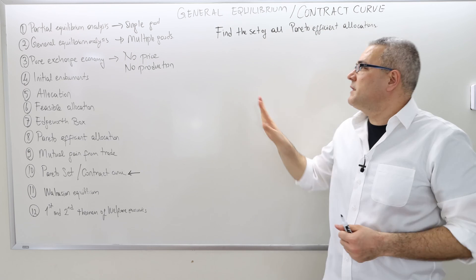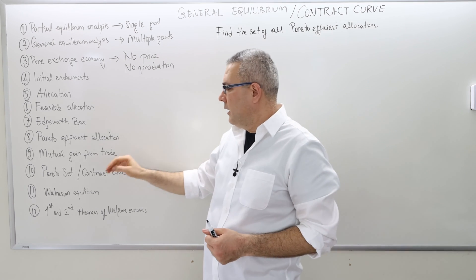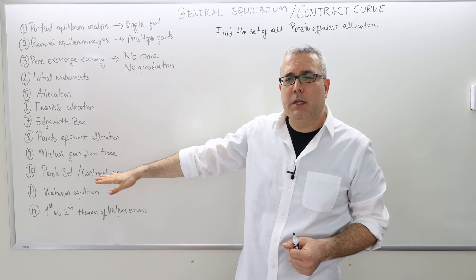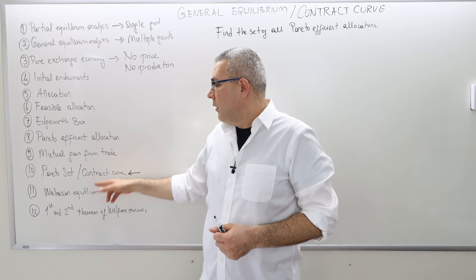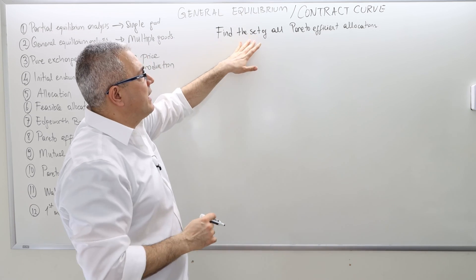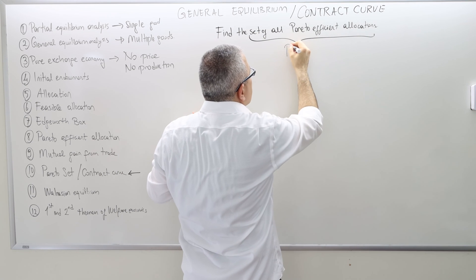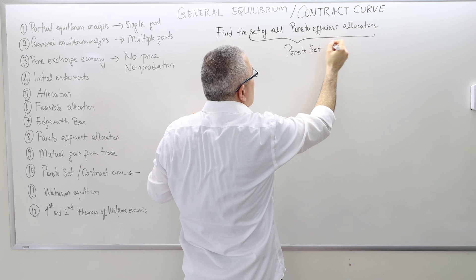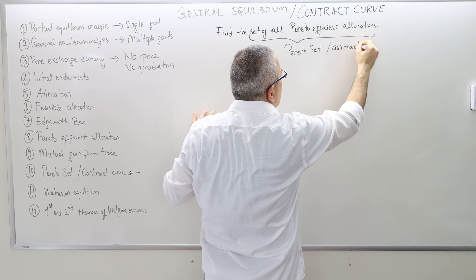In this video, I'm going to talk about finding the set of all Pareto optimal allocations, or the Pareto set, or what we call the contract curve. The set of all Pareto efficient allocations is called the Pareto set or contract curve.